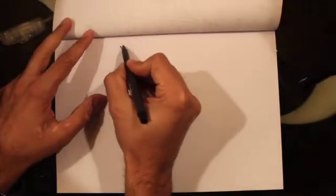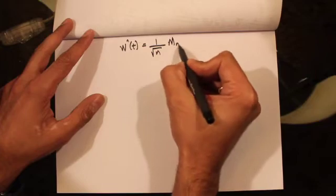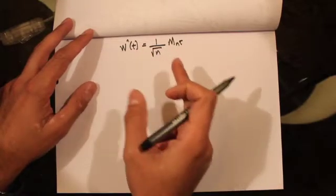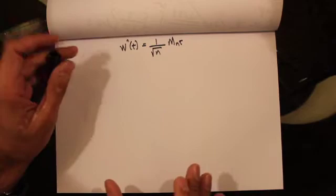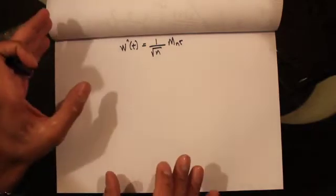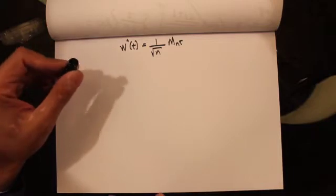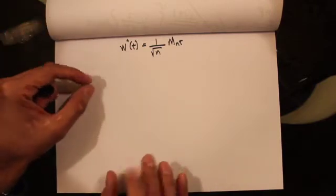In the last lecture we talked about scale-symmetric random walks. We defined the scale-symmetric random walk as wn(t) = (1/√n) · m(nt), where n is some integer and t is continuous time. We talked about various properties: it is a martingale, its quadratic variation accumulates at a rate of 1 per unit time, and the non-overlapping increments of this process are independent.